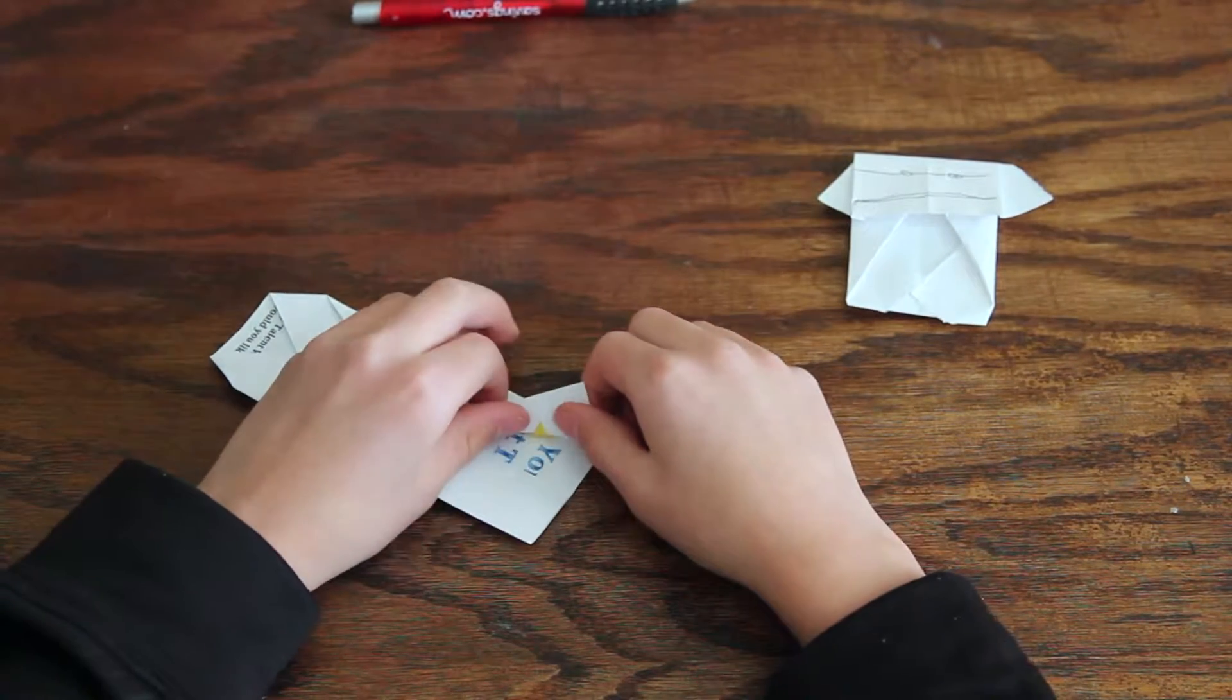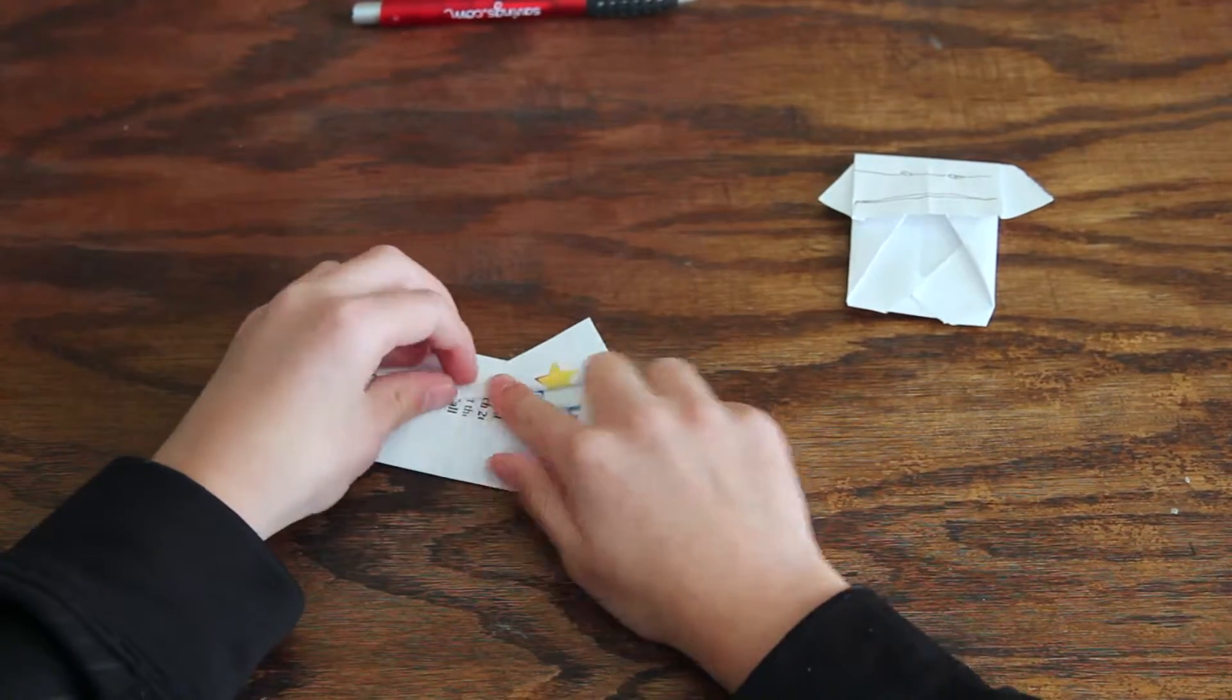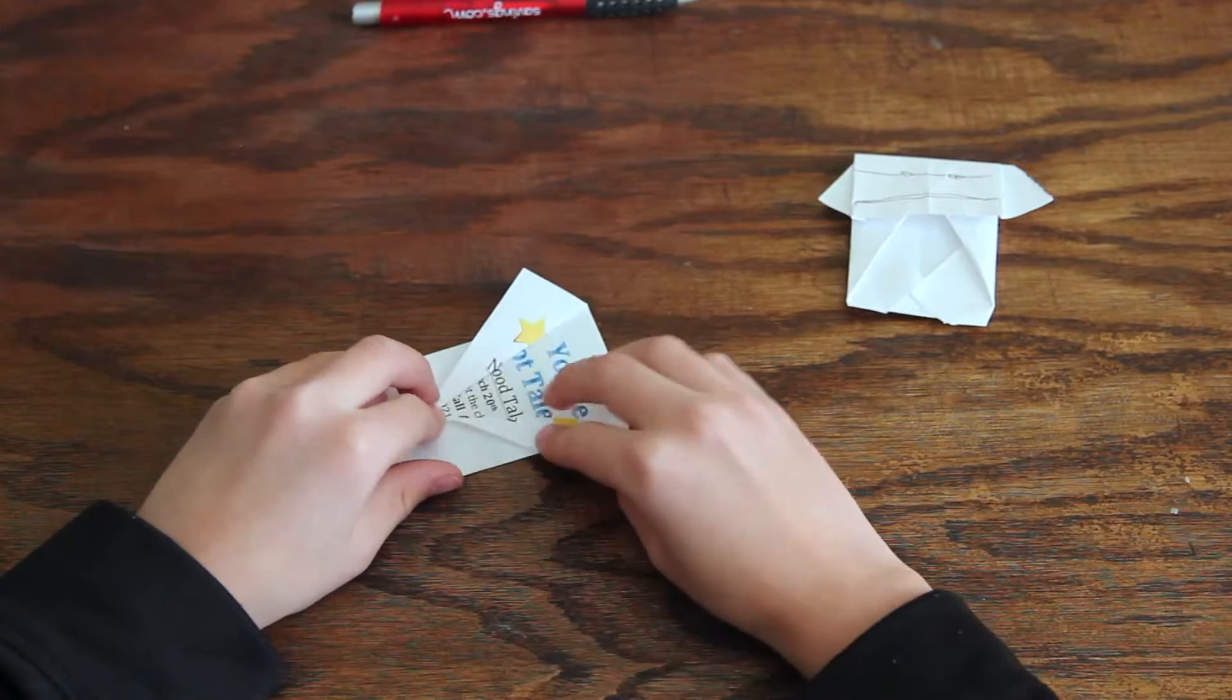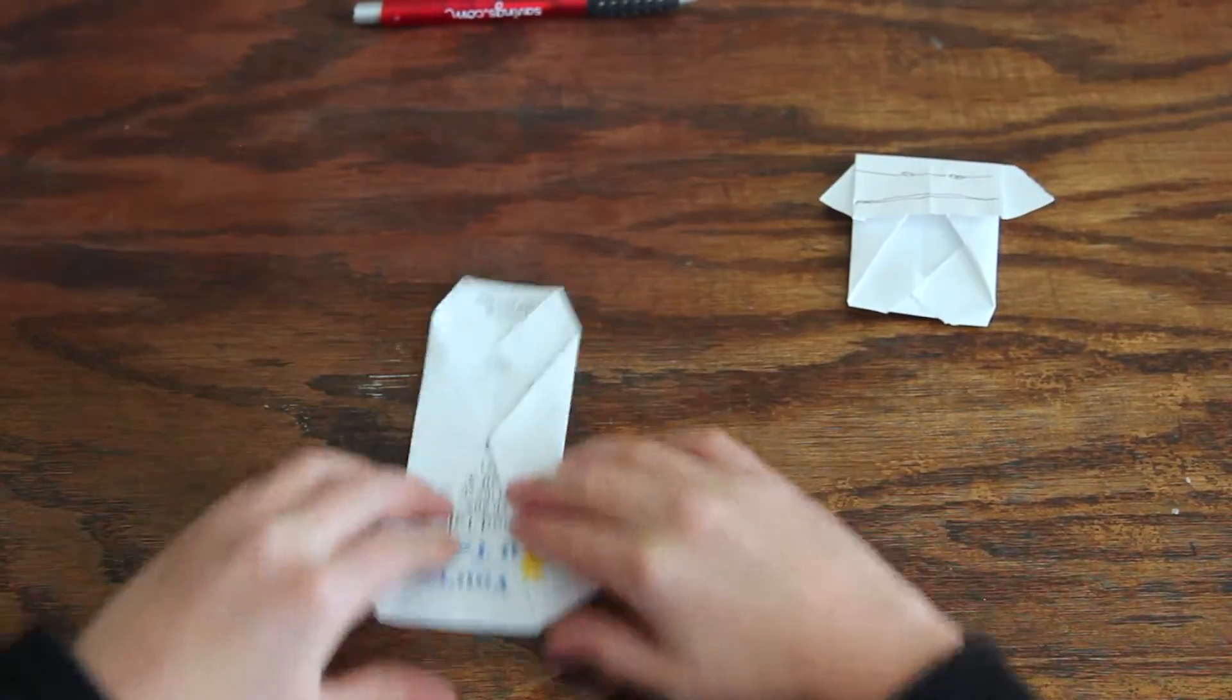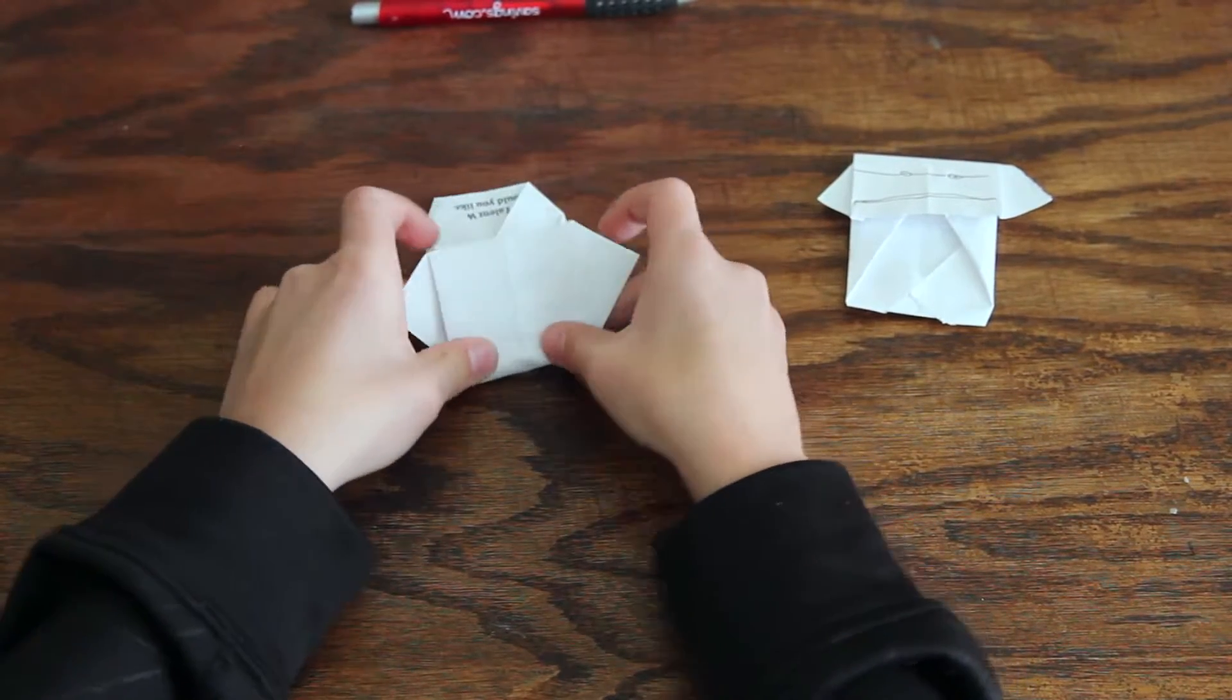If you have folded the real origami Yoda, you can just fold those out like this, just like for the ears. So you can fold it like this, but then you fold it like that and fold it just a little over the ears.